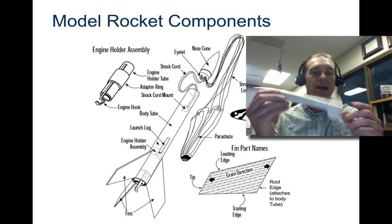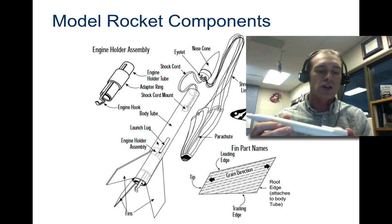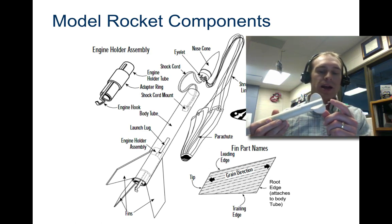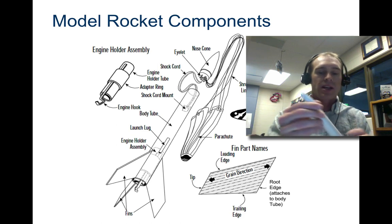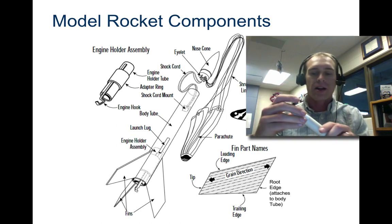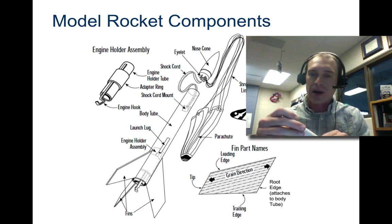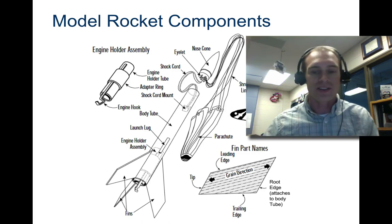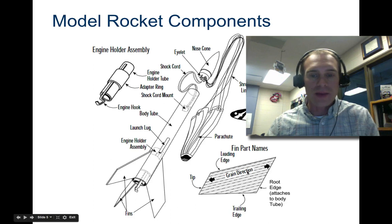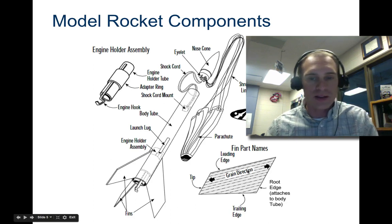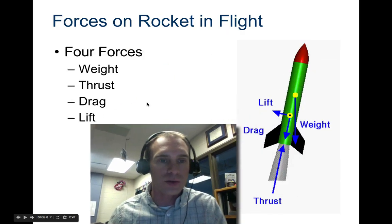These are the components we're going to use for your rocket: the tube, the launch lug — this little metal piece that holds the engine in — the nose cone, which should pop off, and a parachute inside that also pops off. Then we have the fins. It's important to know how to cut the fins so that the grain is along the leading edge — we'll talk about that later.